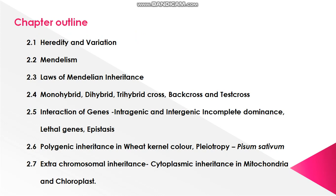Chapter Outline: Heredity and Variation, Mendelism, Laws of Mendelian Inheritance, Monohybrid Cross, Dihybrid Cross, Trihybrid Cross, Back Cross and Test Cross, Interaction of Genes — classified into two types: Intragenic and Intergenic — Incomplete Dominance, Lethal Genes, Epistasis, Polygenic Inheritance in Wheat Kernel Color, Pleiotropy in Pisum sativum, Extra-Chromosomal Inheritance, and Cytoplasmic Inheritance in Mitochondria and Chloroplast.